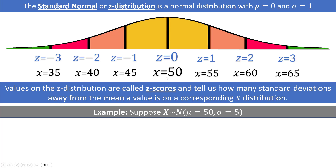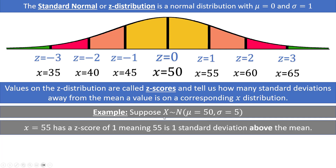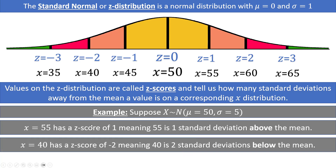Each of these X values has a corresponding Z value or Z score. For example, the X value of 55 corresponds to a Z score of 1, which means that 55 is 1 standard deviation above the mean. The value X equals 40 corresponds to a Z score of negative 2, meaning that 40 is 2 standard deviations below the mean. Any negative Z scores represent standard deviations below the mean, and any positive Z scores represent standard deviations above the mean.